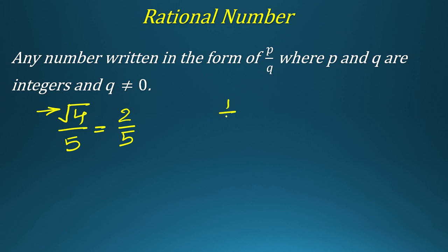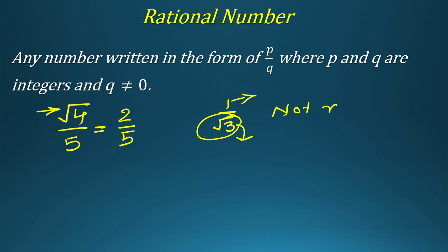Now consider 1 over root 3. Here, 1 is an integer — that's fine — but root 3 is not an integer because it is an irrational, non-terminating number. So 1 over root 3 is not a rational number. Whatever examples are given in the exam, analyze the number carefully. Think before writing the answer, not after, because overthinking after writing will waste your time.